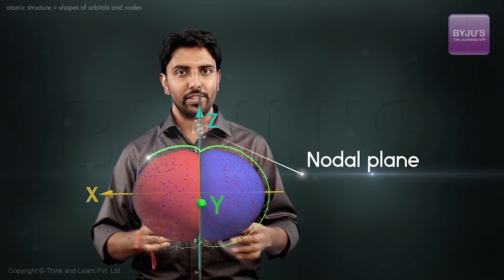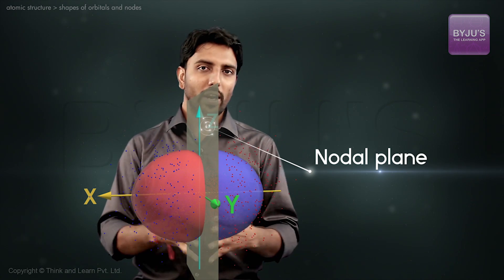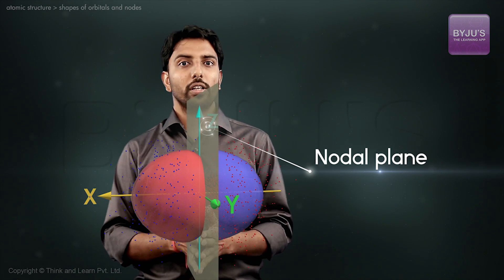If we draw a 90% contour, we get this region. The plane which bisects the lobes on either side is called the nodal plane.